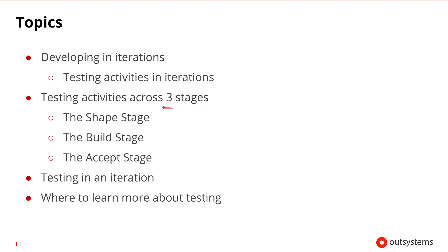We'll look at these different testing activities across the three stages that they can occur in: the shape stage, the build stage, and the accept stage. Then we'll go back and look at all the different types of testing that occur in a single iteration, and we'll finish up by discussing where you can learn more about testing. So let's go ahead and get started.